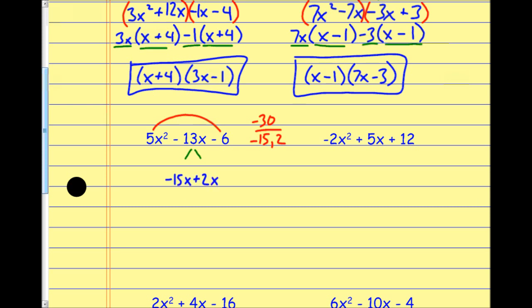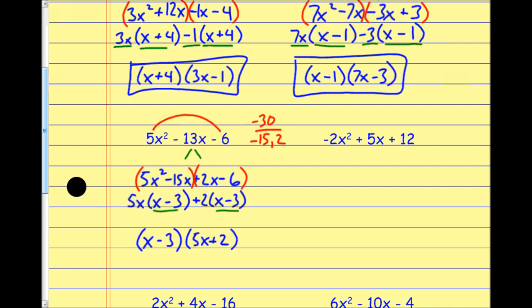The 5x squared and minus 6 tag along for the ride. I do my factoring by grouping: out of the first group I factor out 5x, leaving x minus 3; out of the second group I factor out positive 2, leaving x minus 3. The common polynomial factor is x minus 3, and removing it leaves 5x plus 2. Note that negative 15 and 2 are the only numbers satisfying the condition — for example, negative 3 and negative 10 do not multiply to negative 30.